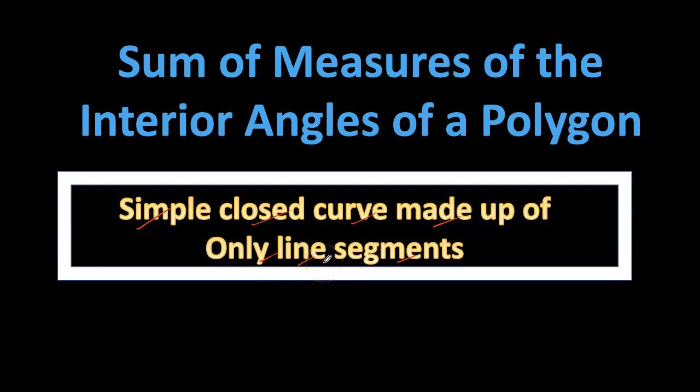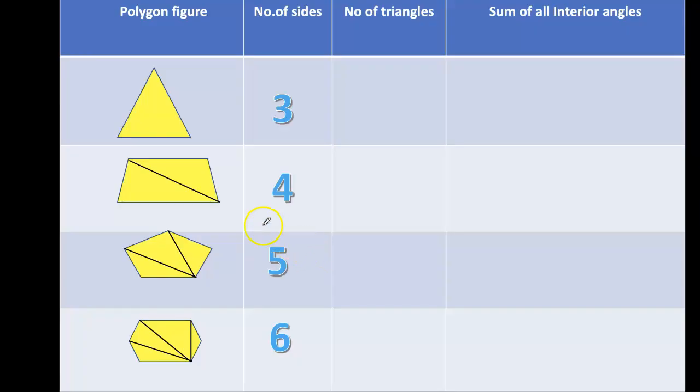Let us see different types of polygons. Triangle: number of sides three. Quadrilateral: number of sides four. Pentagon: number of sides five.